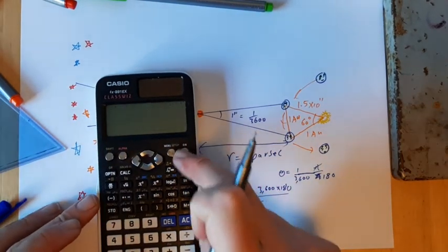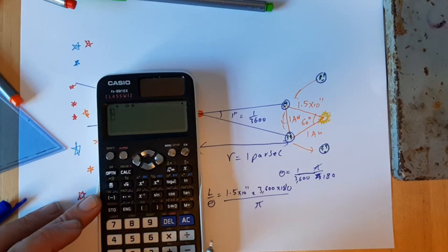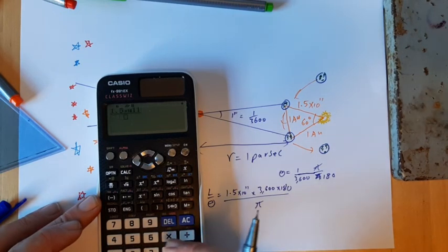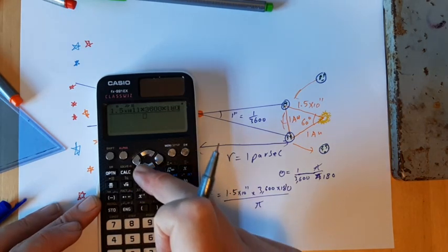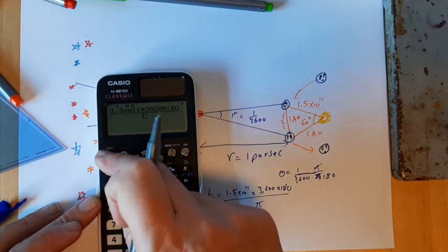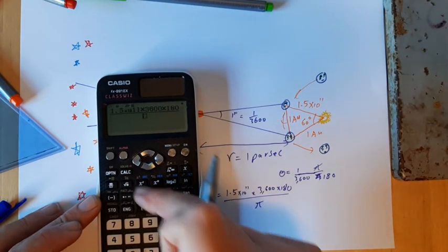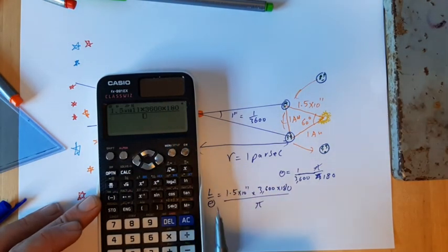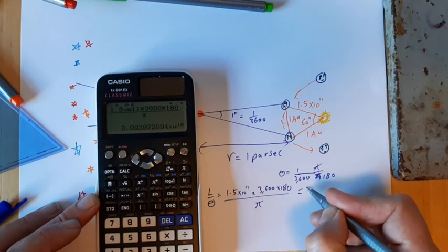The answer should be 3 × 10¹⁶ metres. So: 1.5 × 10¹¹ times 3,600 times 180, divided by π. And there you go — that's 1 parsec.